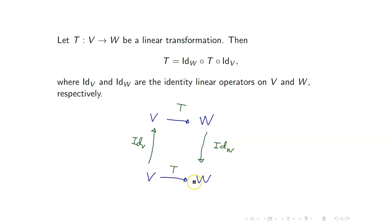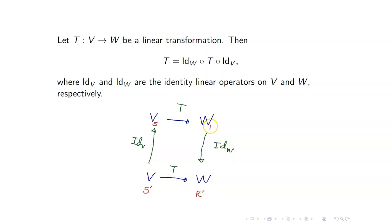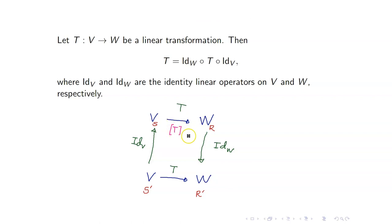This linear transformation from V to W can be obtained by first applying the identity linear operator on V, followed by T, and then followed by the identity linear operator on W. Suppose that I get a pair of ordered bases for V and also for W — let's say I have S and S prime for V, and R prime and R for W. What we want to do is to find out the relationship between the matrix representation of T from S to R and the matrix representation of T from S prime to R prime.